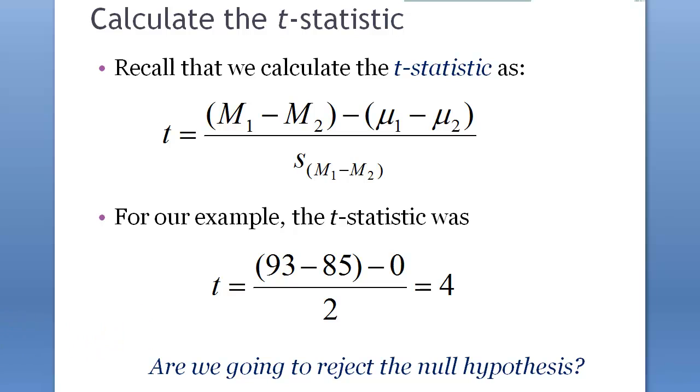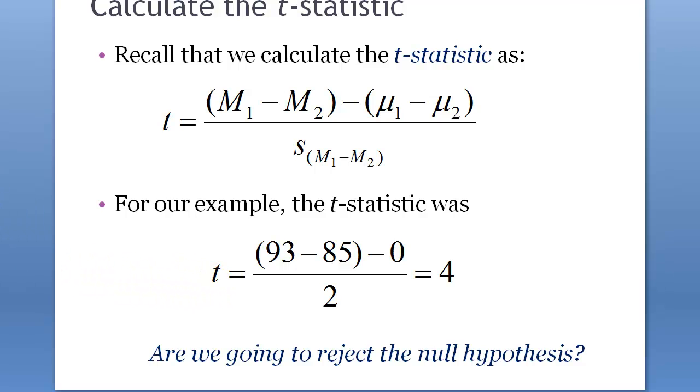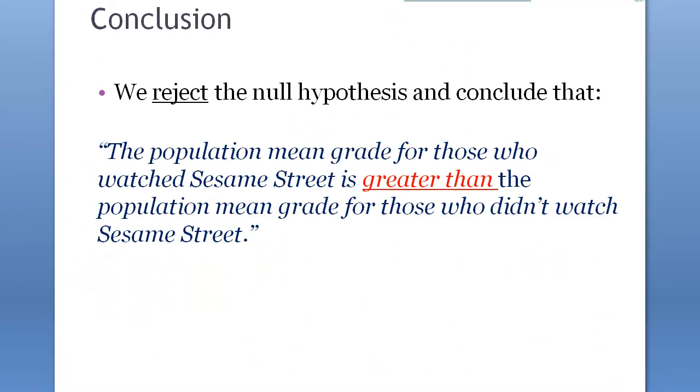And we're going to reject or not. Of course we do, because one-tailed test is only making it easier to reject the hypothesis, because it's making it easier to find a power, find the effect. Here, and the conclusion is that, reject null hypothesis.